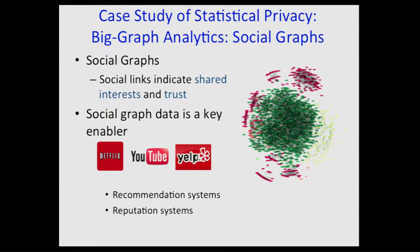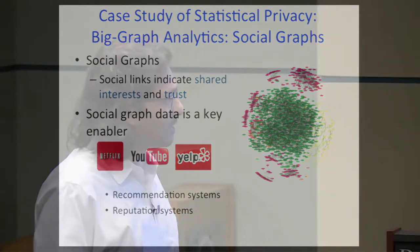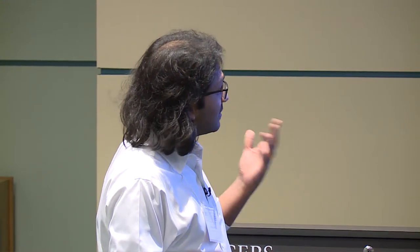I'll first jump onto thinking about how do we exploit the structural properties of data for the design of privacy-preserving mechanisms, demonstrated using a case study of social graph data. Social networks have transformed our communications in the last decade, with social links presenting an indication of shared interest and trust amongst users. The social graph is a key enabler for recommendation systems, reputation systems, anonymous communication systems, and censorship-resilient communications using social connections.